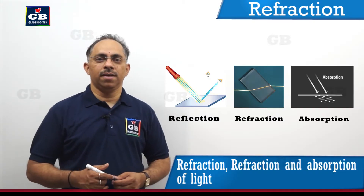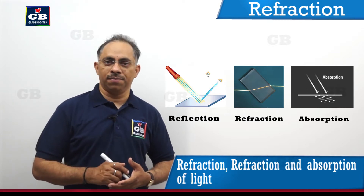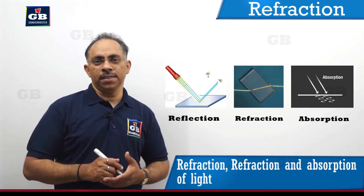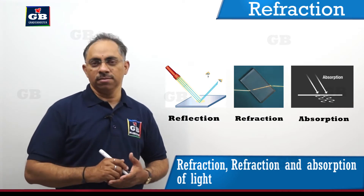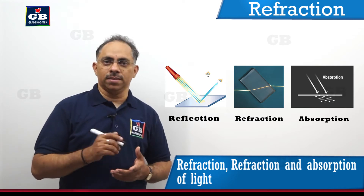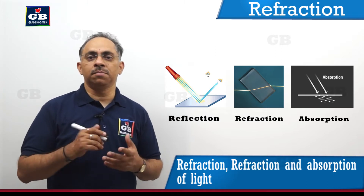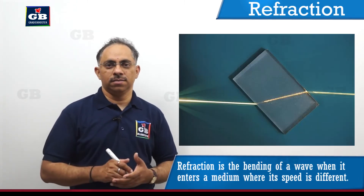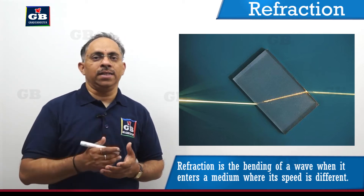Light is basically a form of energy. If it is incident on a surface, three things can happen: one, the surface can reflect some part of the light — that is reflection. Two, the surface can transmit the light through it. And the third thing that can happen is the medium can absorb the light.